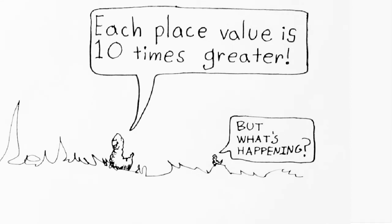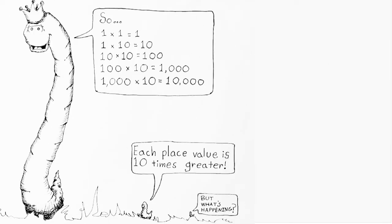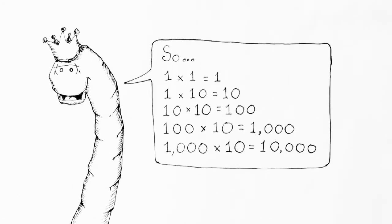So what's really happening? Each place value is ten times greater as we move from right to left. When we start in the ones place and have a one, it's equal to one. If we multiply it by 10, it moves over one place value to the left and is now equal to ten. If we take that ten and multiply it by ten again, it's equal to a hundred. Take the hundred and multiply by ten — it's now equal to 1,000. Take the thousand and multiply by ten — it's now equal to 10,000. Each time that one keeps moving a place value over to the left and becomes 10 times greater.